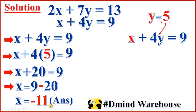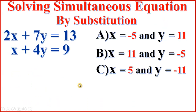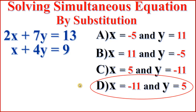This is the answer for x. Now we can check whether the values of x and y are correct or not. The answer for 2x plus 7y equal to 13 and x plus 4y equal to 9 is: x is negative 11, and y is positive 5.